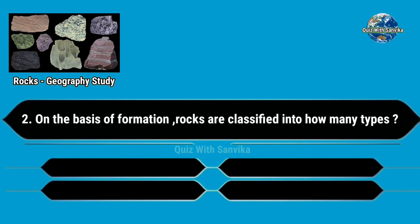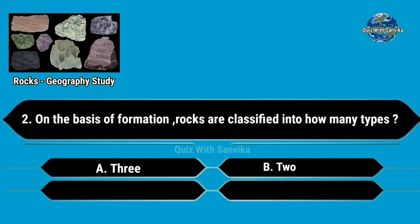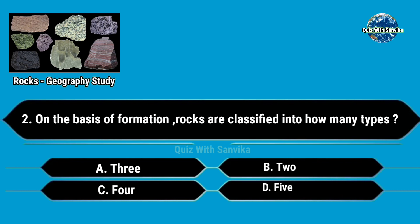On the basis of formation, rocks are classified into how many types? Options are A. 3, B. 2, C. 4, and D. 5. Answer is A. 3.